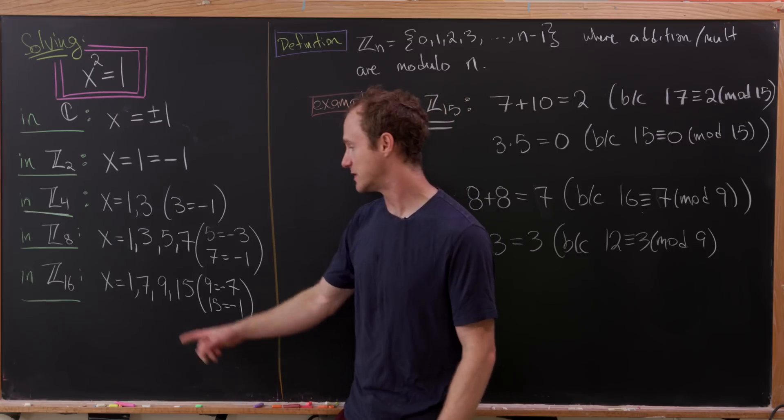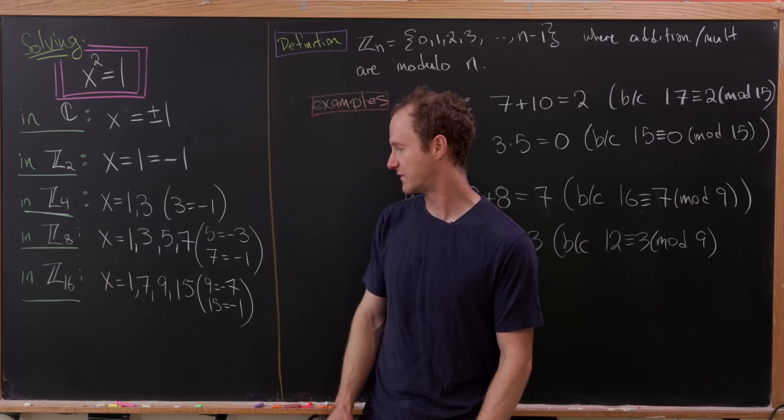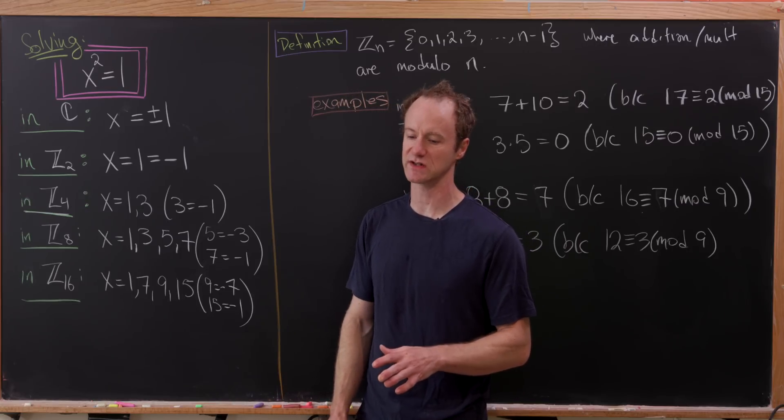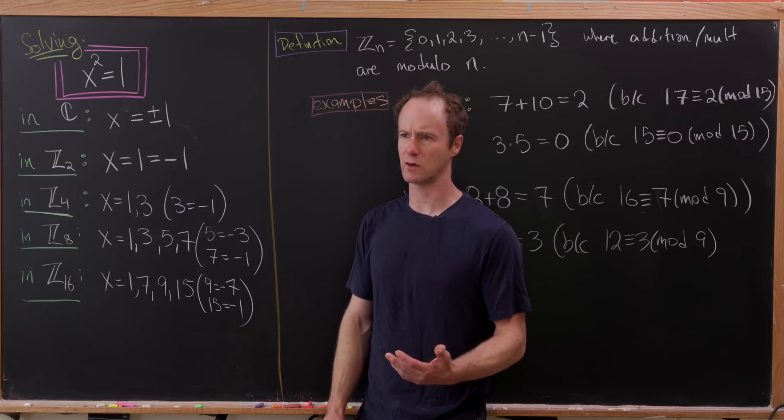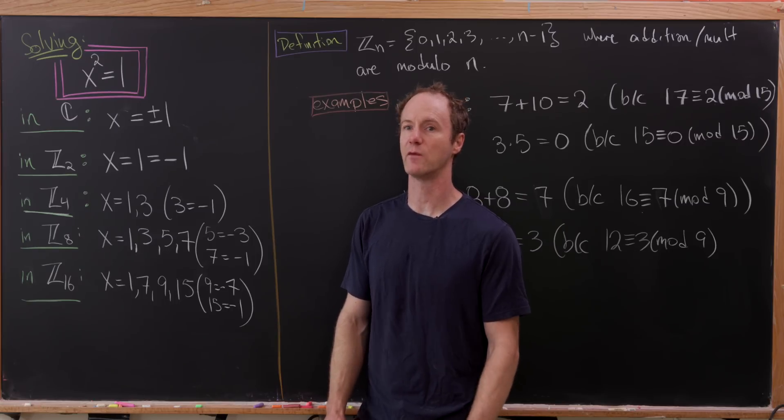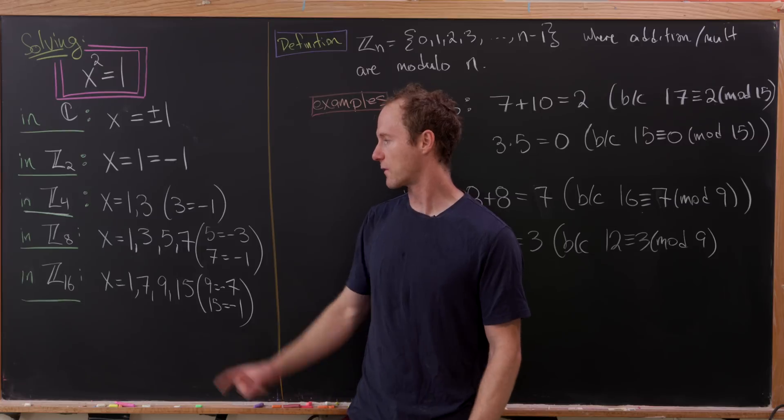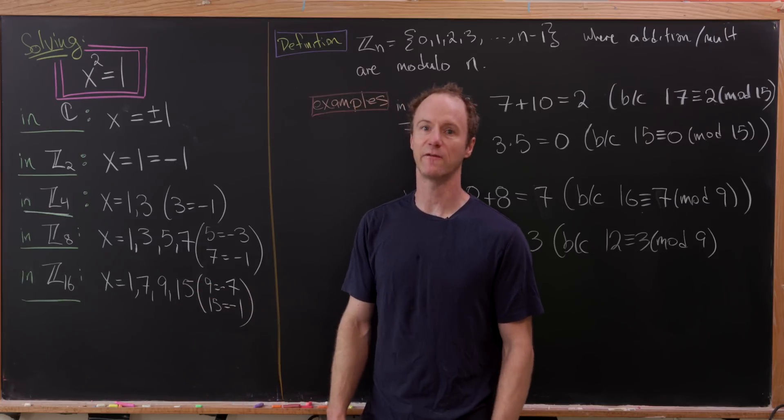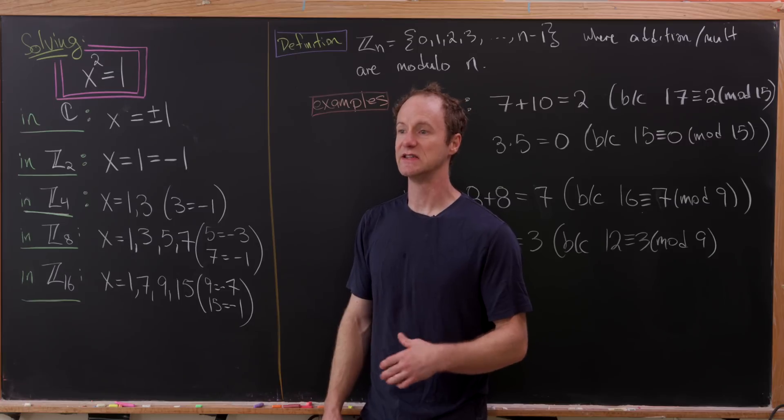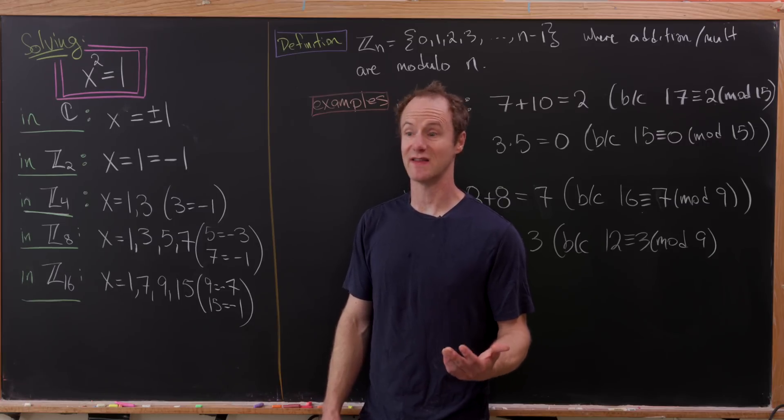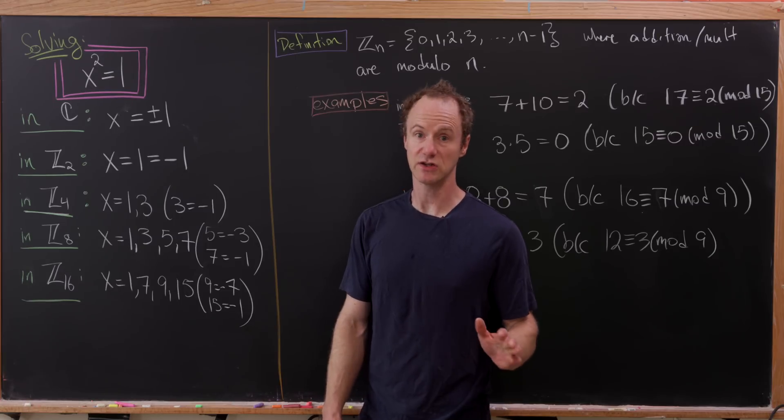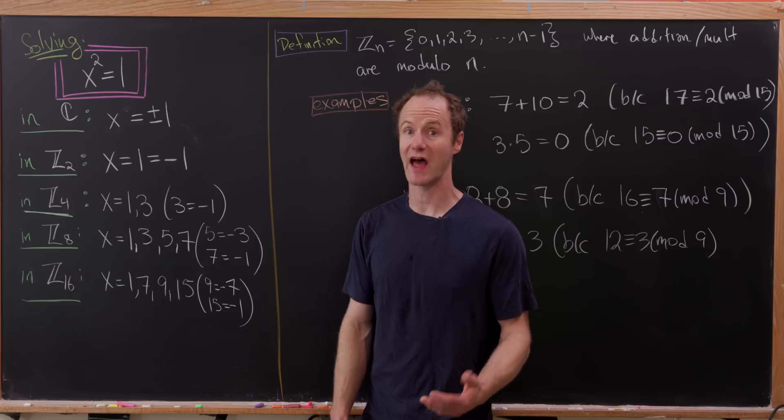And in ℤ₁₆, we get 1, 7, 9, and 15. Another 4 solutions. But what you can guess, or maybe guess after looking at a couple of more cases, is that from here out, you always get 4 solutions if you're looking at ℤ₂ⁿ. And that's exactly what we're going to do for the rest of this video, is show that is the fact.